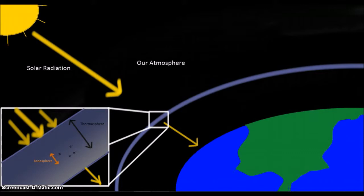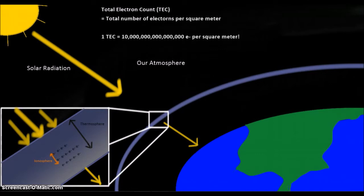Every 11 years, we experience an increase in sunspots and solar activity, and a corresponding increase in the total number of electrons per unit area, known as the total electron count, or TEC. 1 TEC is equal to 10 quadrillion electrons per square meter.